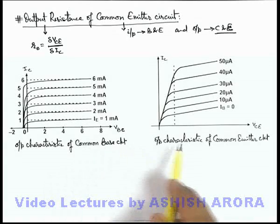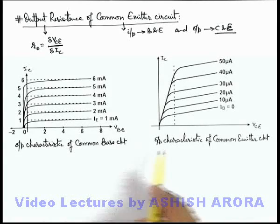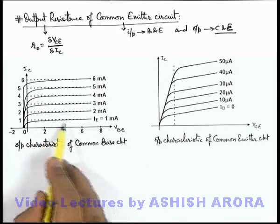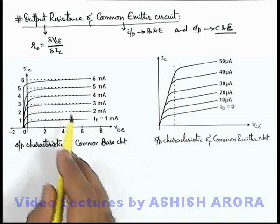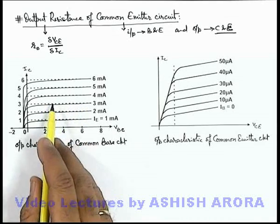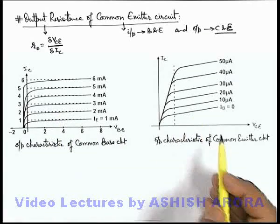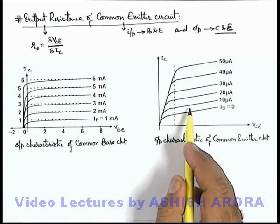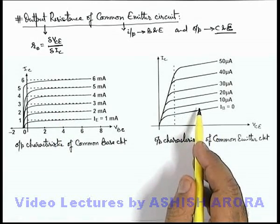In both of these situations, we can say the slope of common base output characteristic is almost zero or it is very small, and the slope of common emitter circuit is relatively on higher side.